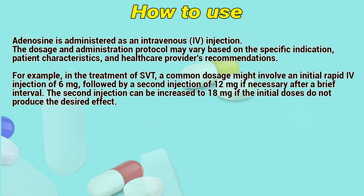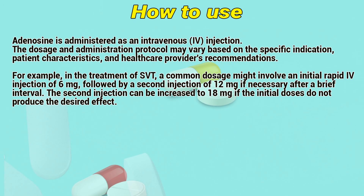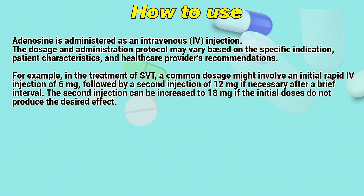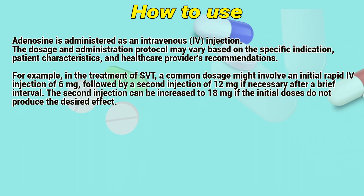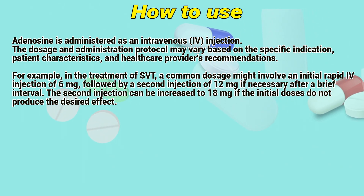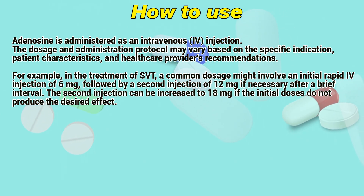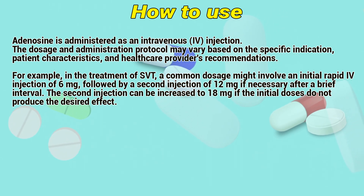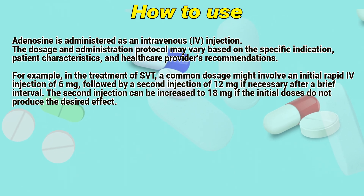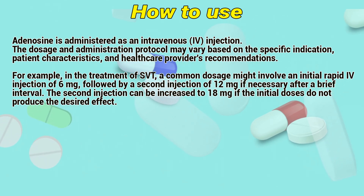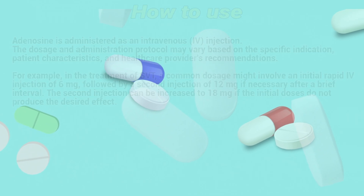How to use: Adenosine is administered as an intravenous injection. The dosage and administration protocol may vary based on the specific indication, patient characteristics, and healthcare provider's recommendations. For example, in the treatment of SVT, a common dosage might involve an initial rapid IV injection of 6 mg, followed by a second injection of 12 mg if necessary after a brief interval. The second injection can be increased to 18 mg if the initial doses do not produce the desired effect.